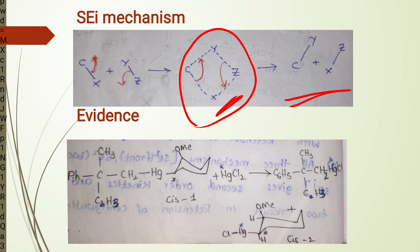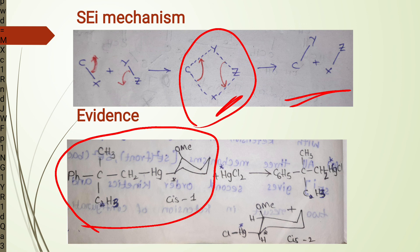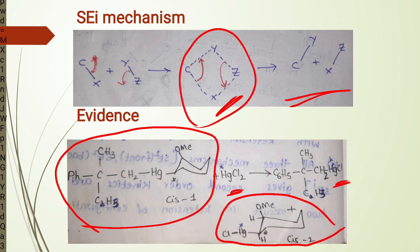For example, when an R,S substrate is treated with labelled mercuric chloride, it forms 100% R,S product. Both products contain more than half of the labelled mercuric chloride. This is only possible when the bond between mercury and the cyclic ring must have broken, as well as the other carbon-mercury bond being broken, since each product contains above half of the labelled mercury. So there is a possibility of breaking these two bonds.